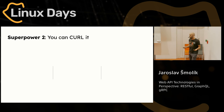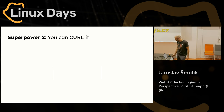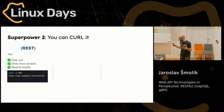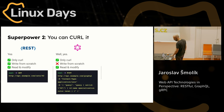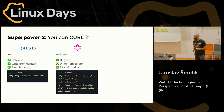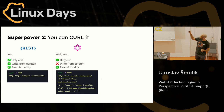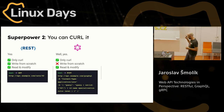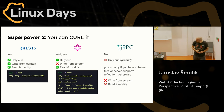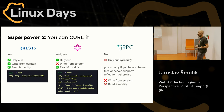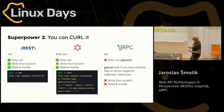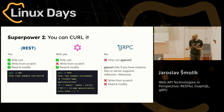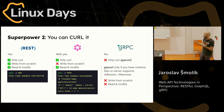Superpower number two: you can curl it. With REST, it's perfect — you don't need anything, just curl, and you can read and modify requests easily. With GraphQL, you can still curl it; you might not write it from scratch most of the time, but you can still read and modify it, and you still only need curl. With gRPC, you'll be disappointed — because of protocol buffers serialization, you can't easily curl it. There is a tool called gRPC curl that handles the encoding for you, but you need schema files or the server needs to support reflection.